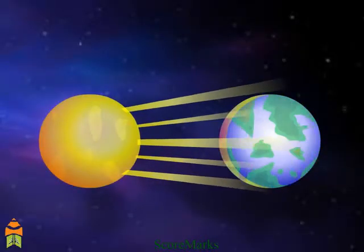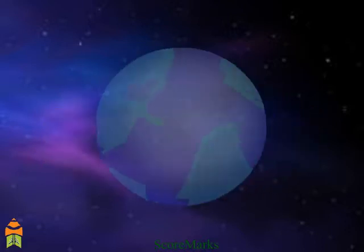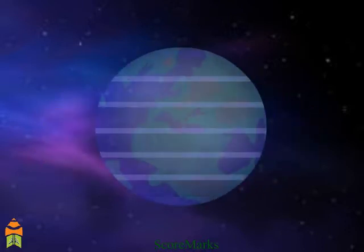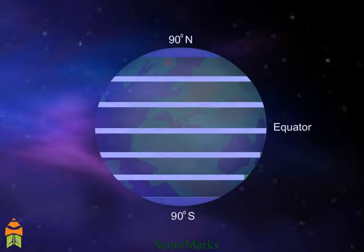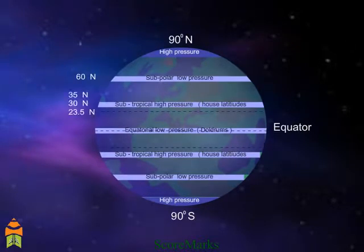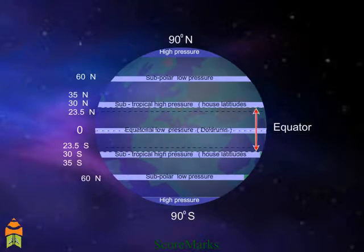Due to this, the air in the region gets warm and rises. Cooler air from either side of the equator rushes in to take its place. Thus, winds blow towards the equator from north to south.